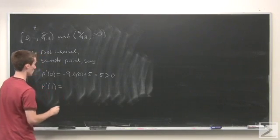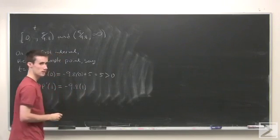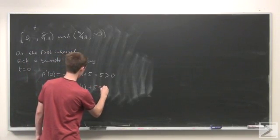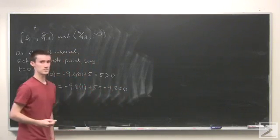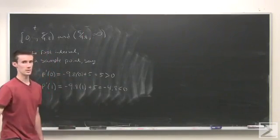So the derivative at 1 is negative 9.8 times 1 plus 5, which is negative 4.8, and that's less than 0. So we can tell that it's decreasing on this interval here.